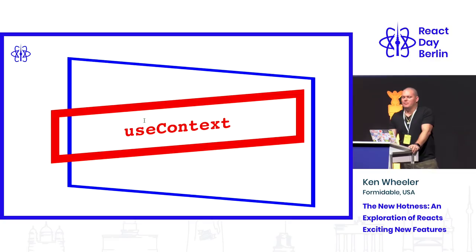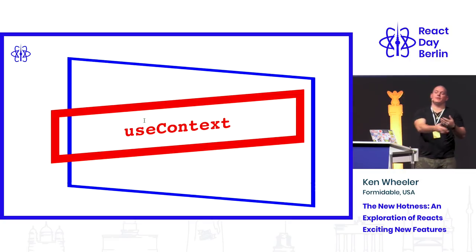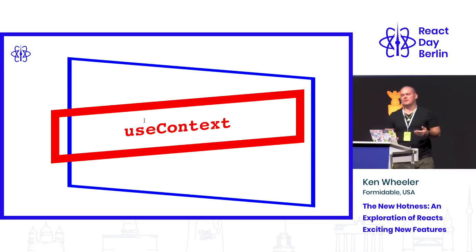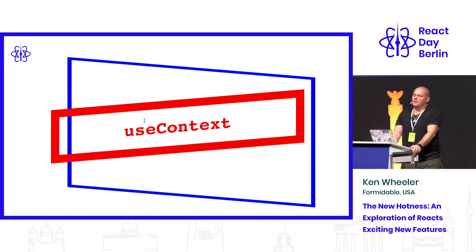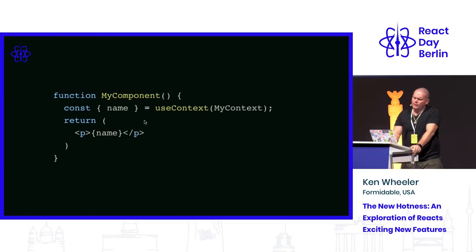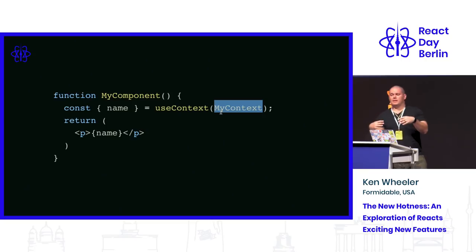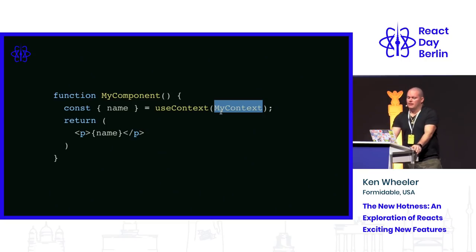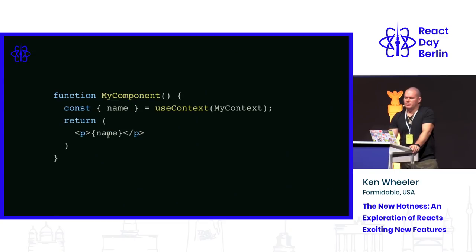useContext may or may not be something you use as much. Similar to the static contextType in classes — if you have a provider higher up in the tree and a context object, you feed that top-level context object into useContext and it gives you the latest value. It's clean, doesn't create a new component.